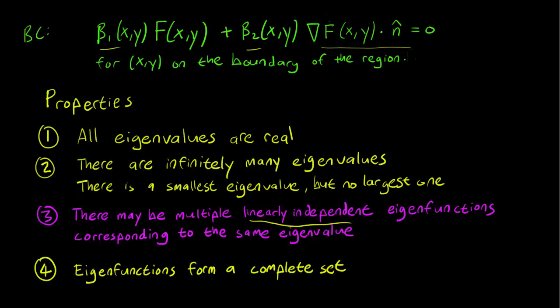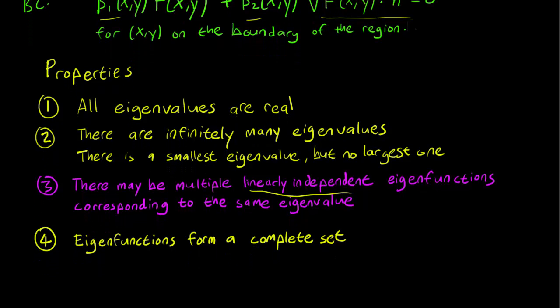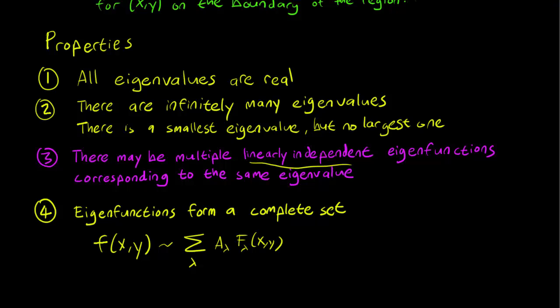The fourth property, and this is another familiar one, is that the eigenfunctions form a complete set. And this means, of course, that there is a Fourier series. That is, you can take linear combinations of the eigenfunction to approximate any piecewise smooth function, f x y. Again, this also works in three dimensions, of course. And the sum over the lambda simply means that we're summing across all the eigenfunctions, or all the eigenvalues.